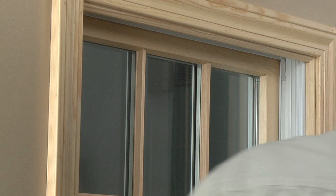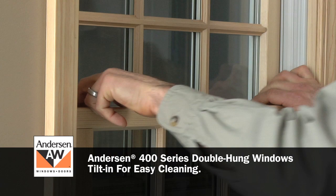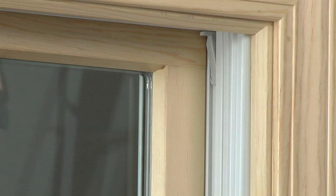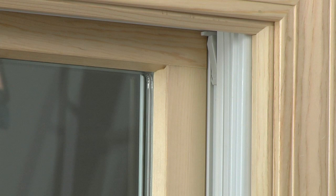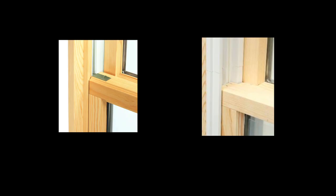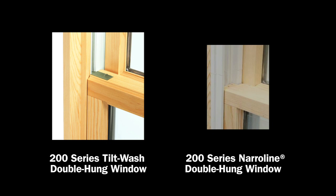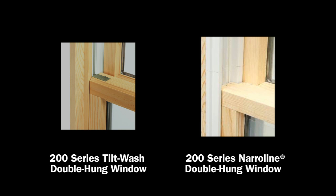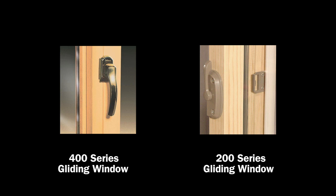For double hung windows, here's a tip: look for the tilt mechanism. Anderson 400 series double hung windows have a tilt wash feature for easy cleaning and the tilt mechanisms are located in the interior jamb. Anderson 200 series double hung windows will either tilt in or will not tilt. If your window has tilt latches on the check rail and tilts in, you have a 200 series tilt wash double hung. If it does not tilt, you have a 200 series narrow line double hung window.